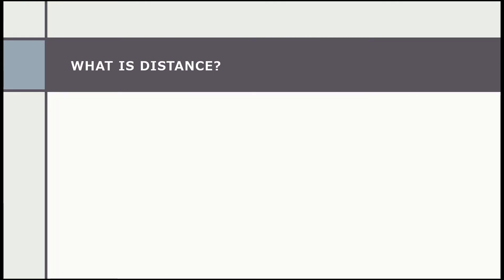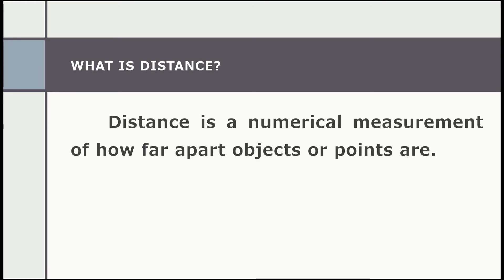What is distance? Distance is a numerical measurement of how far apart objects or points are. In physics or everyday usage, distance may refer to a physical length or an estimation based on other criteria — for example, two countries over. In most cases, distance from A to B is interchangeable with distance from B to A.